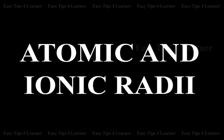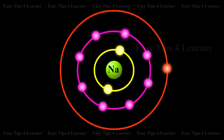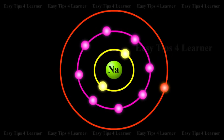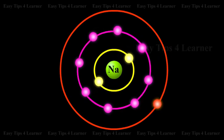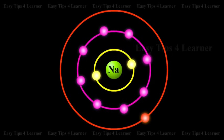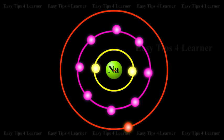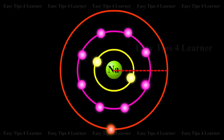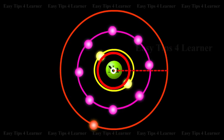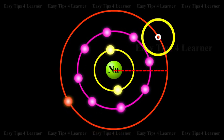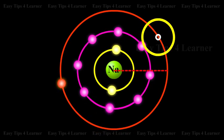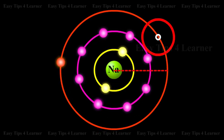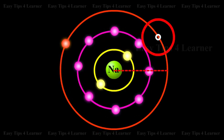Atomic and Ionic Radii. Atomic or Ionic Radius is generally defined as the distance between the center of the nucleus and the outermost shell of electrons in an atom or ion.